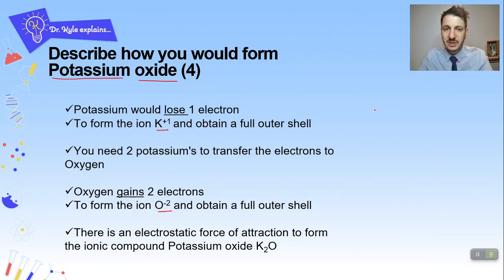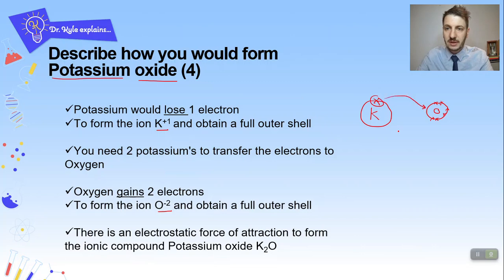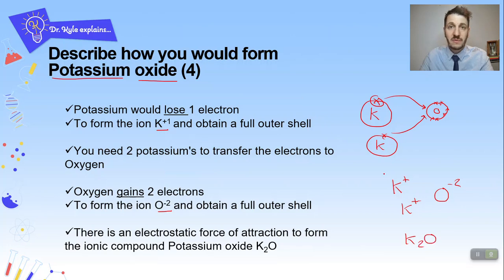Looking at the outer shells: potassium is in group one, so it has one electron in the outer shell. Oxygen is in group six, so it has six outer electrons. One potassium loses its electron — it goes to oxygen. We then need another potassium to lose its outer electron — that also goes to oxygen. So we form K⁺, K⁺, O²⁻, and the formula for the ionic compound is K₂O.